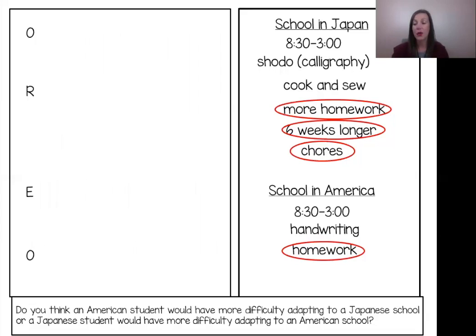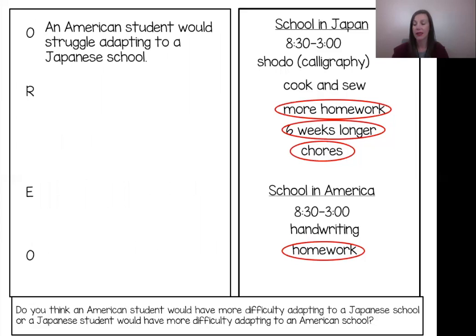O stands for opinion — I must state the opinion I'm going to support in the paragraph. I am going to say that it would be more difficult for an American student to adapt to a Japanese school. Look at my opinion sentence: 'An American student would struggle adapting to a Japanese school.' Does this sentence clearly state my opinion? Yes.